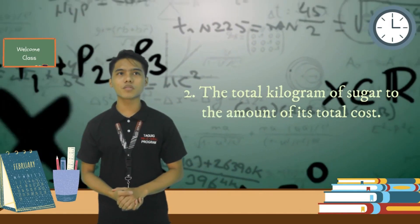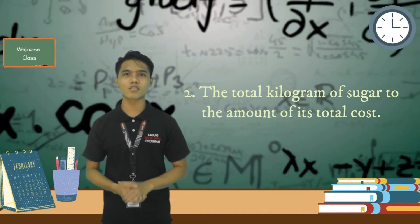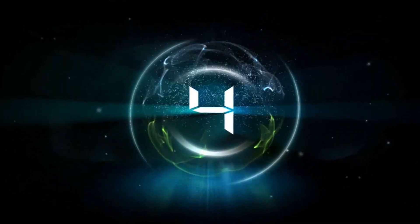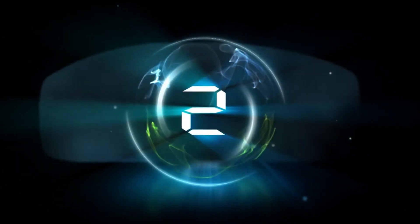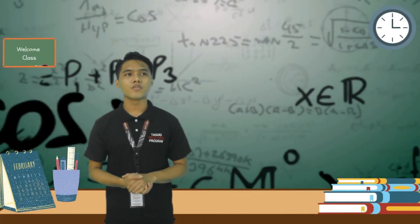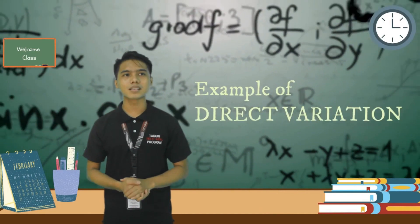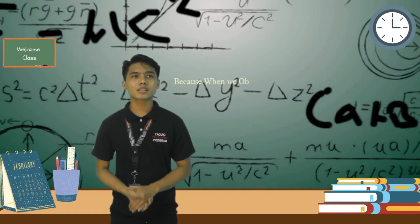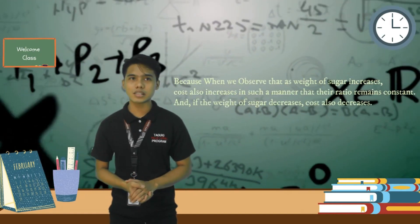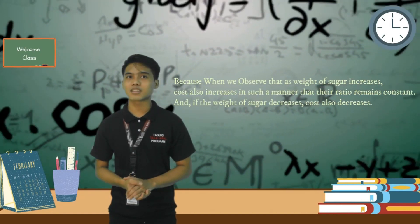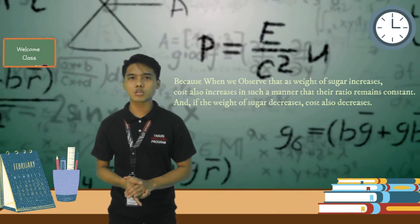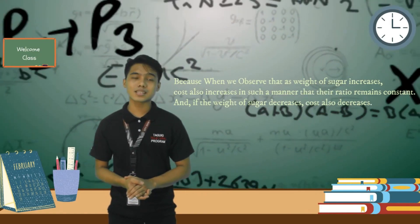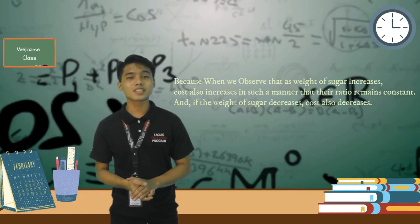Second: the total kilograms of sugar versus the amount of its total cost. This is an example of direct variation, because as the weight of sugar increases, cost also increases in such a manner that their ratio remains constant. And if the weight of sugar decreases, cost also decreases.